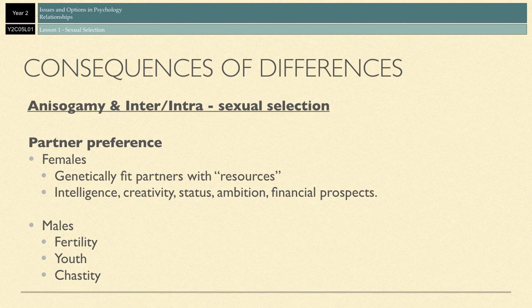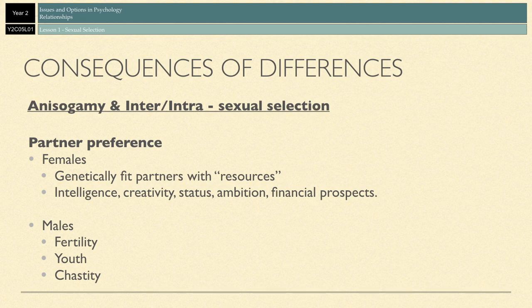I hasten to add: this is evolutionary theory. This is not saying that all men just want to sleep around with young, fertile women, nor that all females are just trying to find the man who can provide the most resources. All the research is suggesting is that universally across many species, including humans, males and females have developed different strategies for ensuring reproductive success, and there are certain traits that both males and females find attractive in the opposite sex — traits that make us consider certain people to be potential reproductive partners over others.